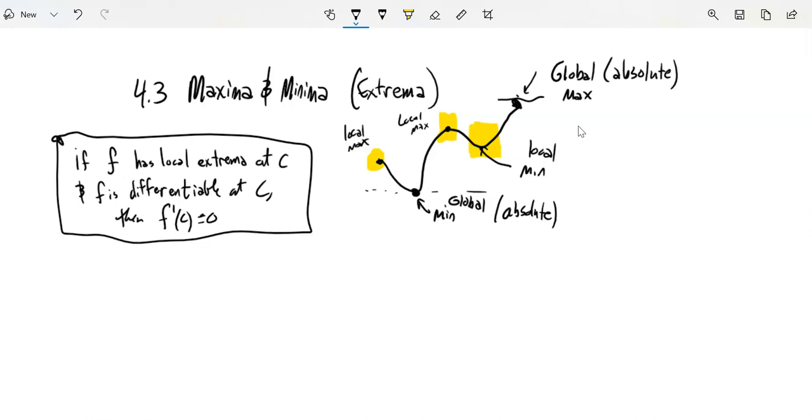So here's a statement: if some function F has local extrema at C, and if F is differentiable at C, then the derivative at that point is zero. Now, this is not talking about endpoints on a graph. This is talking about within an interval. So like this local maximum right here. Notice that if we take the derivative, the slope of the tangent line is zero there and it's zero there as well. So if F has a local extrema at C and F is differentiable at C, then the derivative at C of that function F is equal to zero.